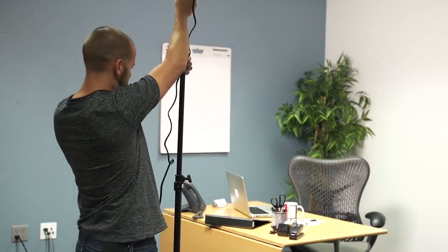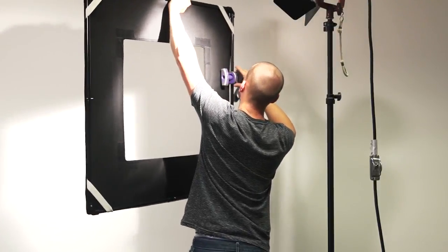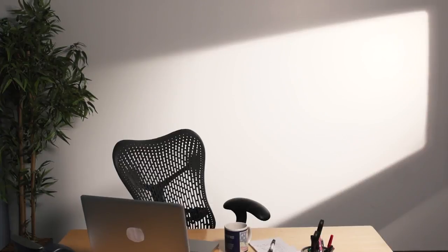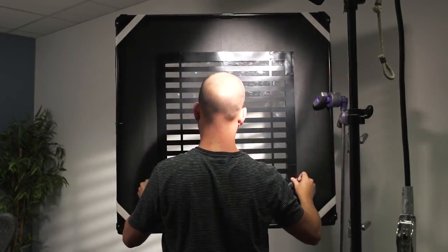Once our main lighting is set, we'll attach the shadow kit to a stand in front of separate lighting to create our shadows. Now we want to add texture to break up the background, so let's try the horizontal blind cookie to provide the illusion of an office window.